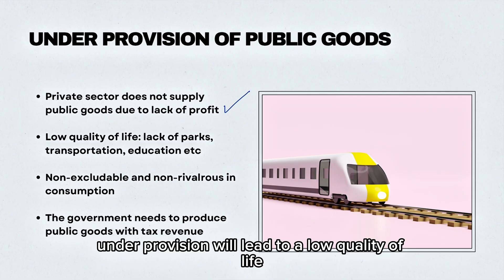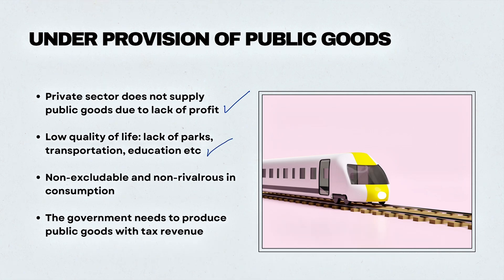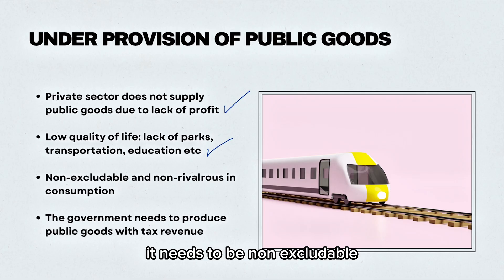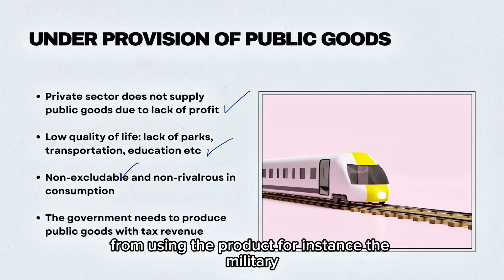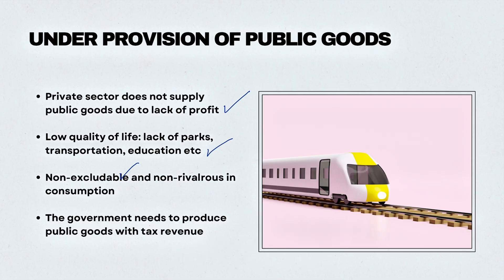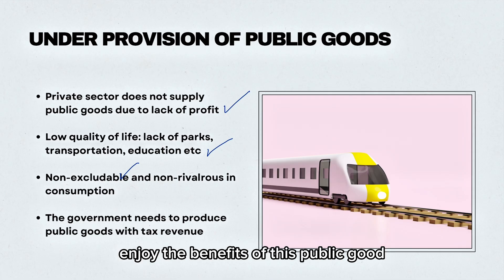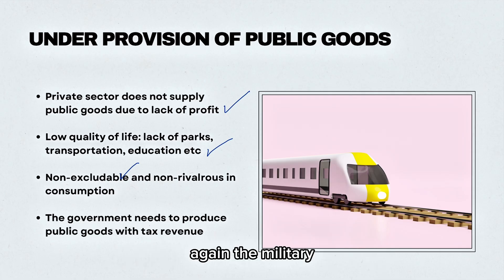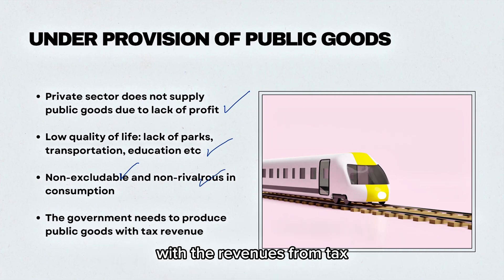Under provision will lead to a low quality of life where we lack parks, transportation, and education. Public goods need to be non-excludable and non-rivalrous in consumption. Non-excludable means you cannot restrict anyone from using the product — for instance, the military, where you cannot exclude any citizens from protection. Non-rivalrous means other people can also enjoy the benefits of this public good. Governments need to produce these public goods with revenues from tax.